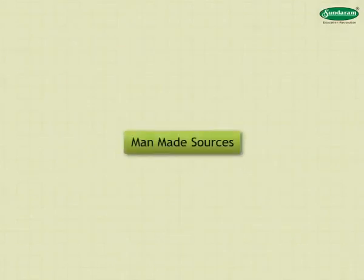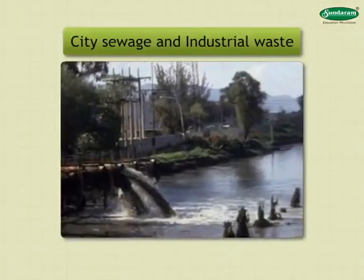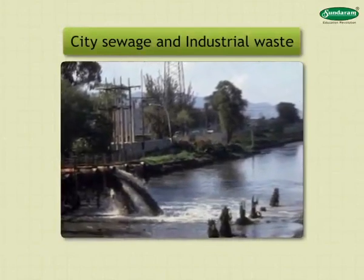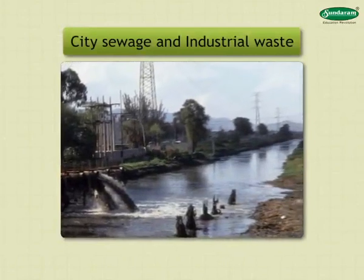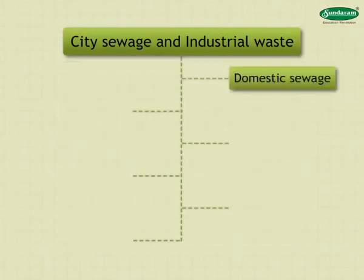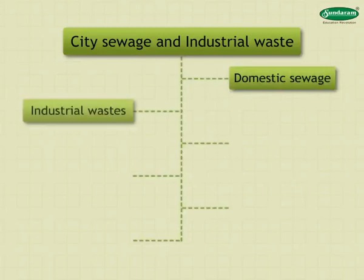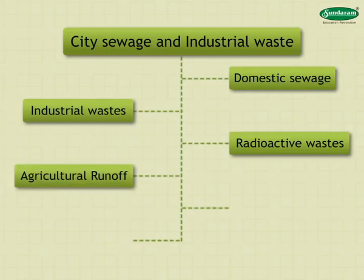Man-made Sources: Man-made sources such as city sewage and industrial waste are the major sources of water pollution. These are classified into: Domestic sewage, Industrial wastes, Radioactive wastes, Agricultural run-off, Oil spills, and Thermal pollution.